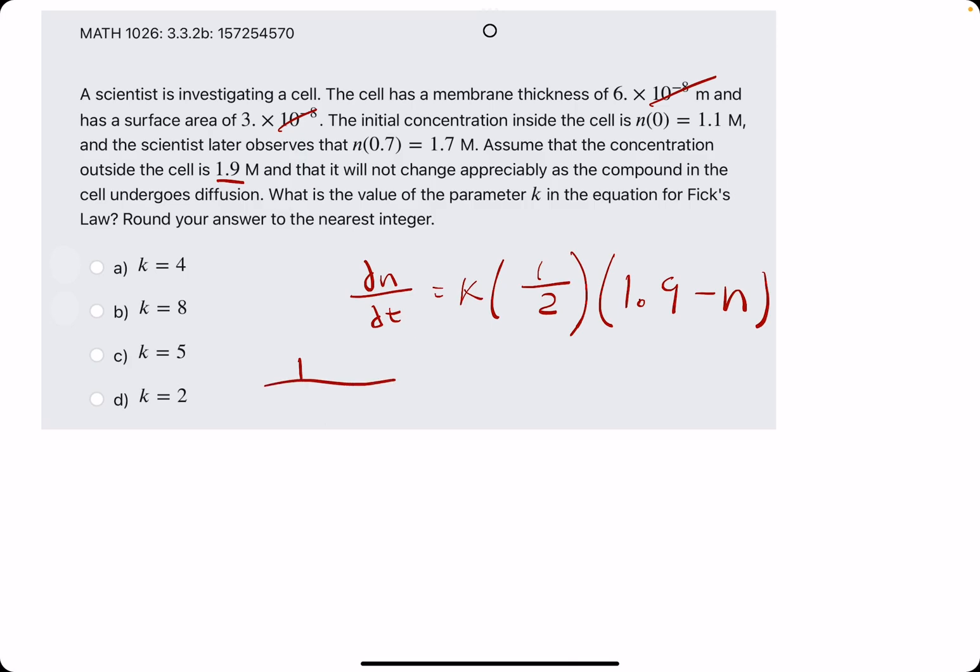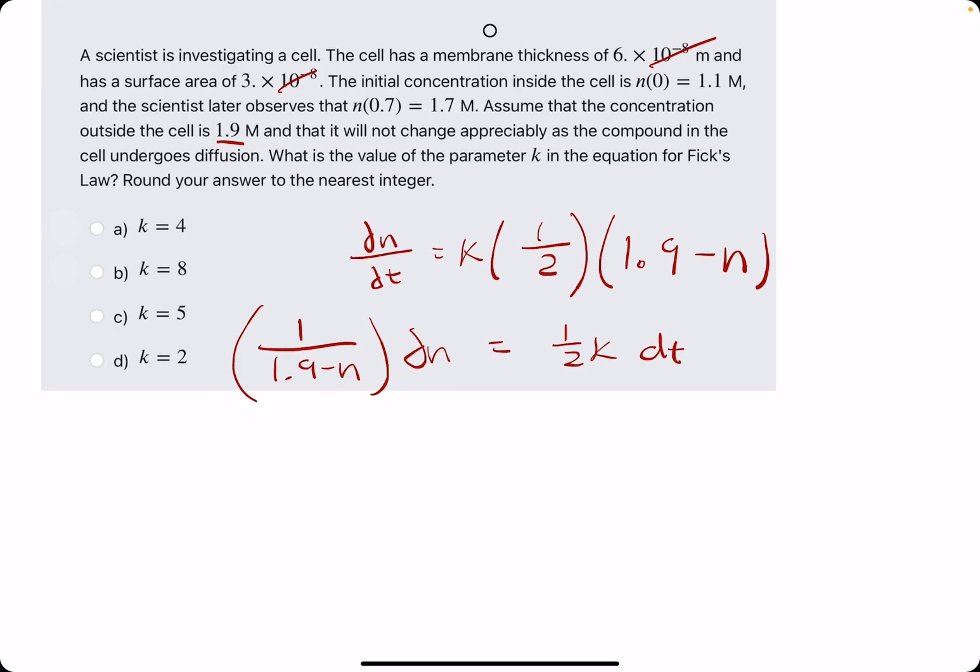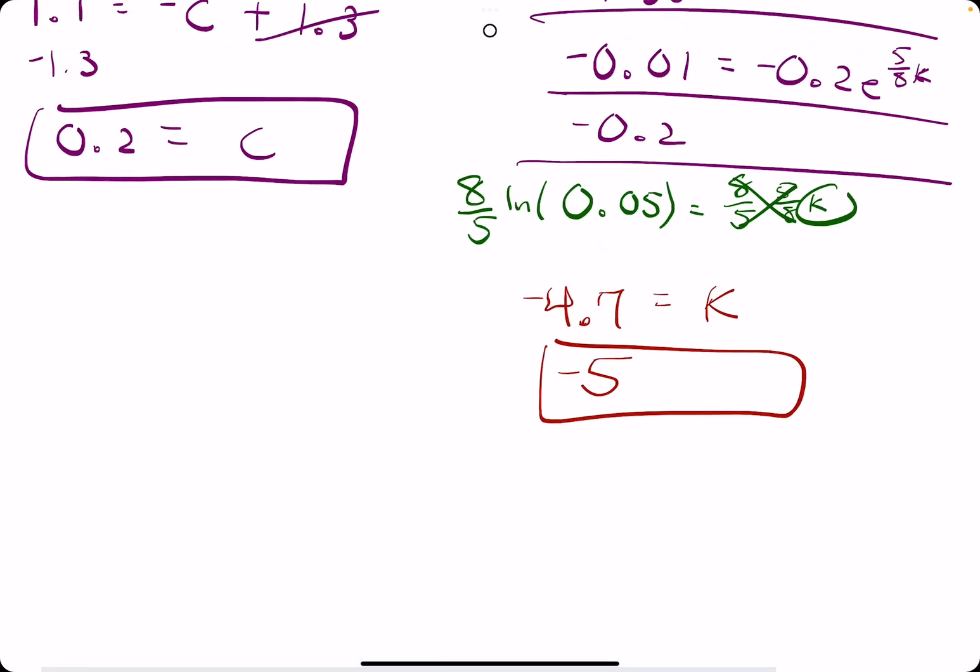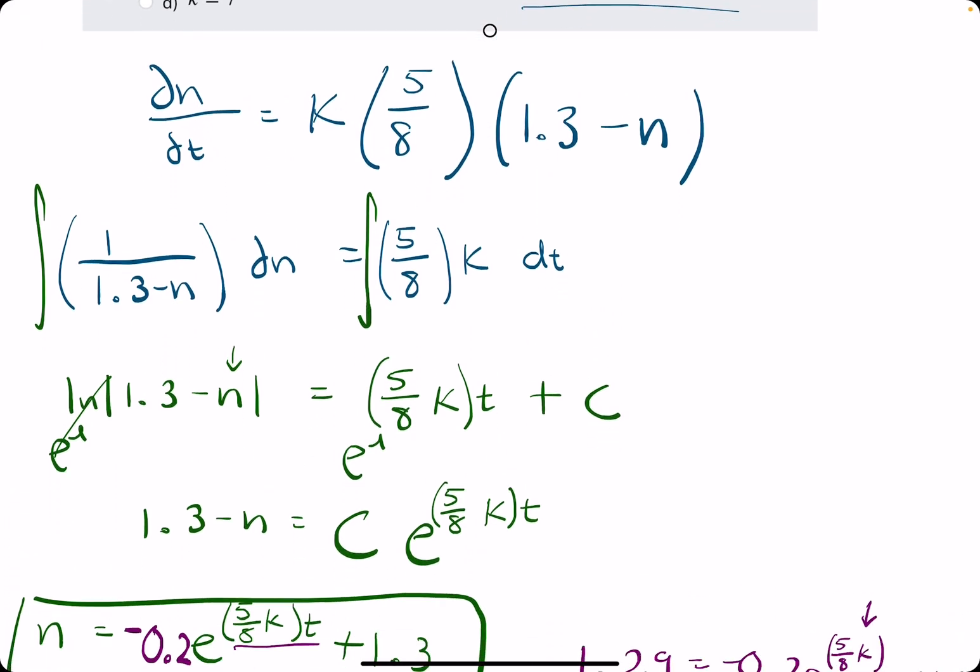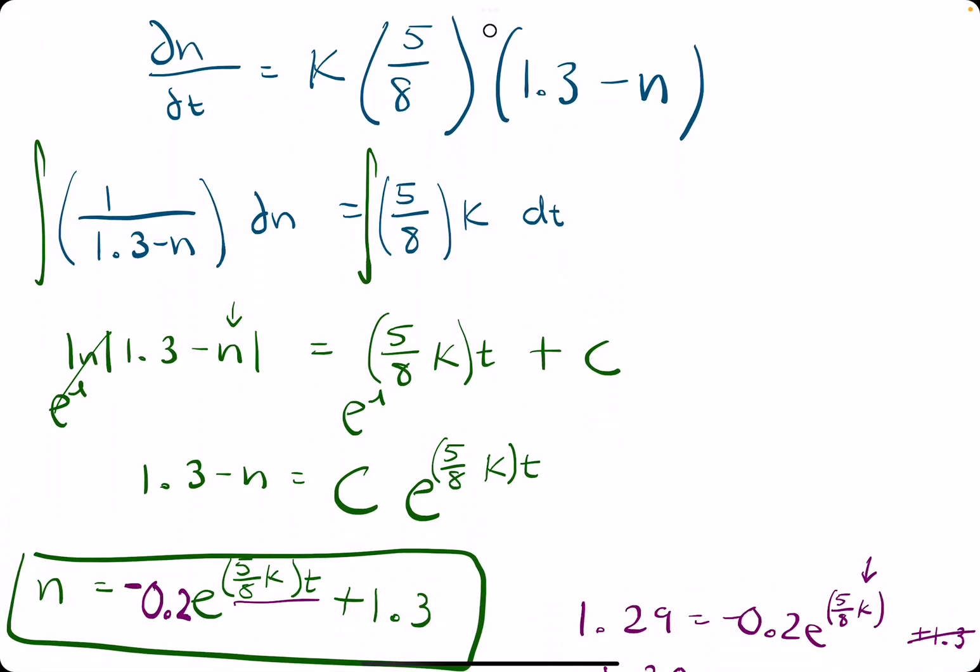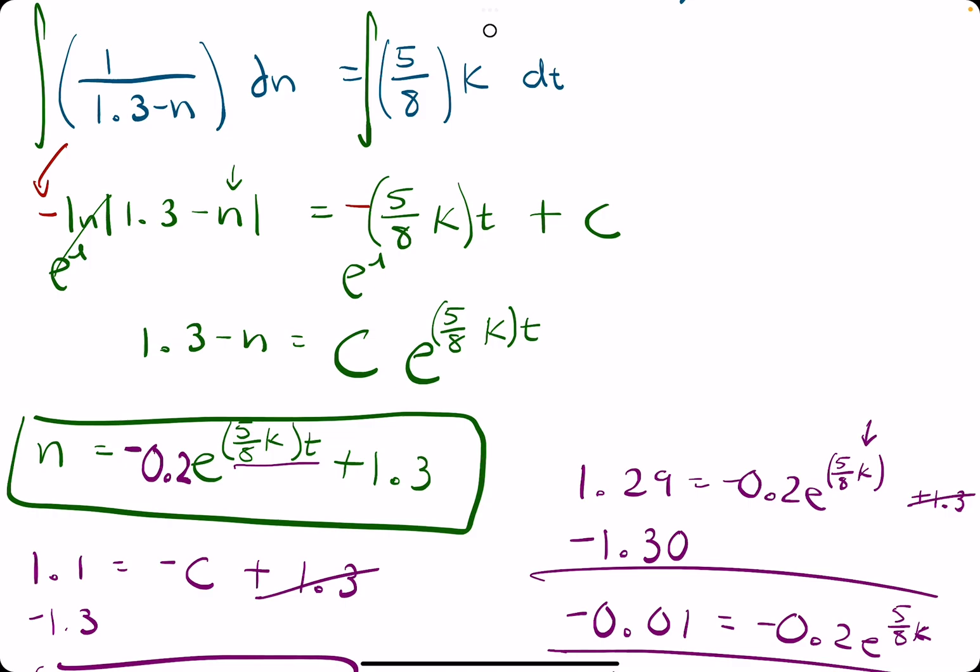We divide by the 1.9 minus n, dn. And then we have 1 half k dt, multiplying the dt to the right side. We integrate both sides, giving us – oh, wait. Did I forget the negative ln? I did. That's why the sign was messed up. Man, oh, man. When I integrated this, there should have been a negative here. Holy cannoli.